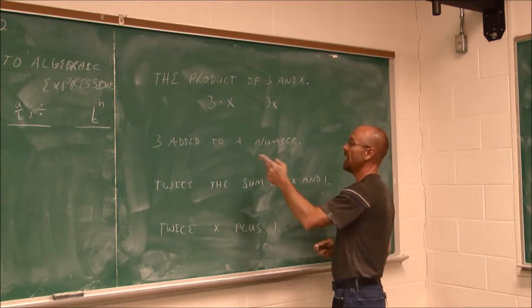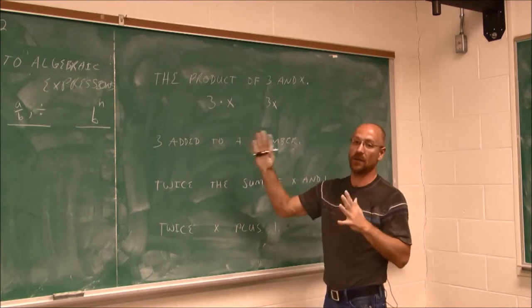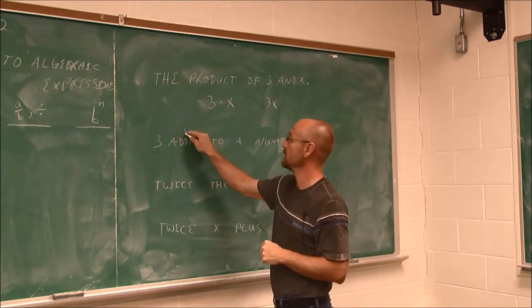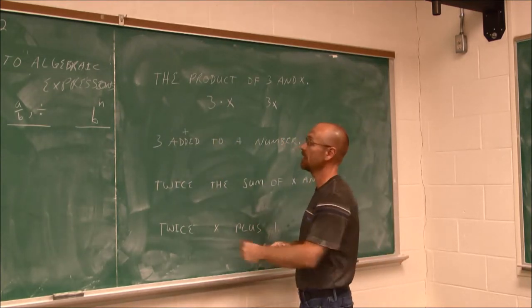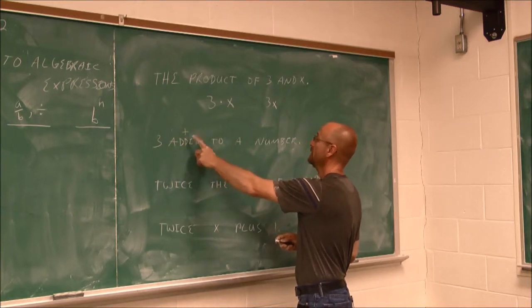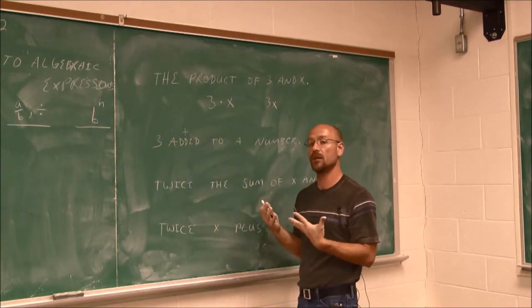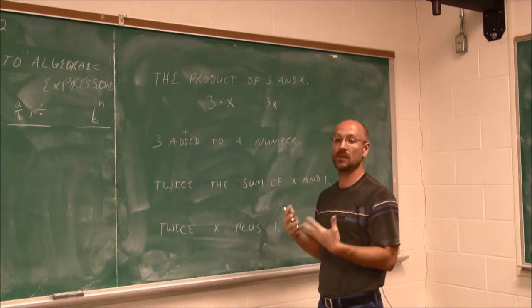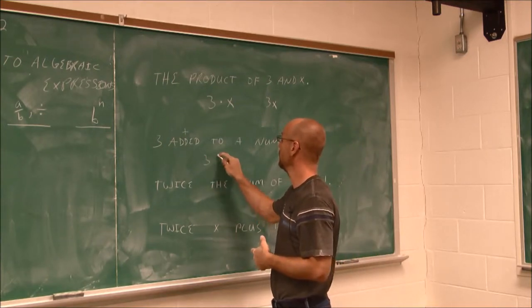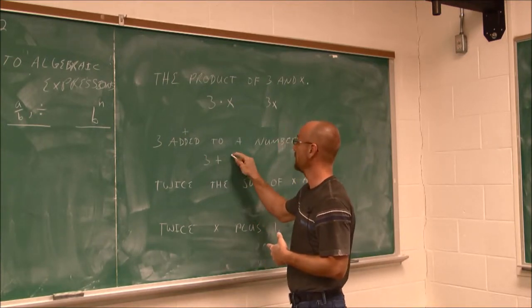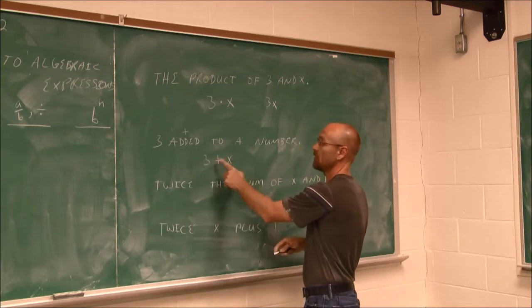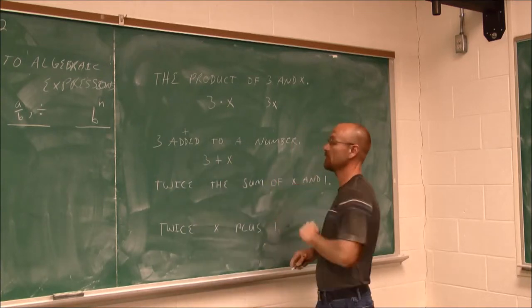Let's look at the next one. 3 added to a number. Well, added, I know what mathematical operation that is. It is that plus sign. 3 added to a number. I don't know what the number is, so I have to assign a variable. So I'm going to say 3 plus, 3 added to a number, and that's exactly what that says.